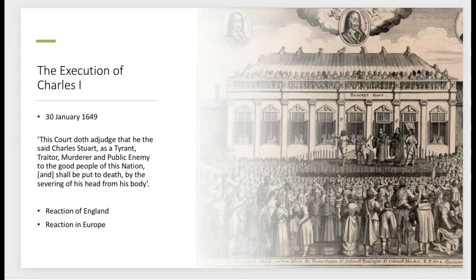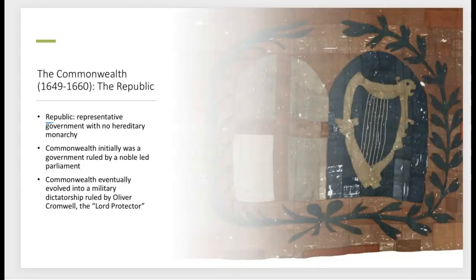He is executed at the beginning of 1649, and the reaction of people in England depended on who you were. But it was a time of uncertainty and certainly fear — now what happens? The reaction across Europe was that it was largely looked down upon and frowned upon, really straining tensions between England and the rest of the continent. After the execution of Charles I, there is the dissolution of the monarchy altogether and the establishment of the Commonwealth, which nominally would be a republic.